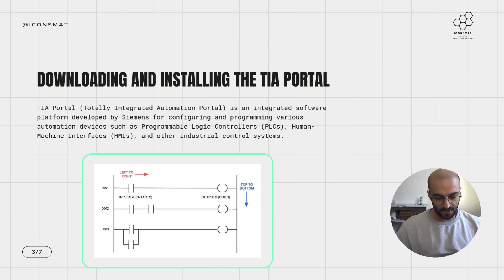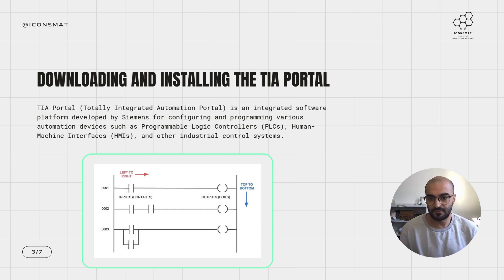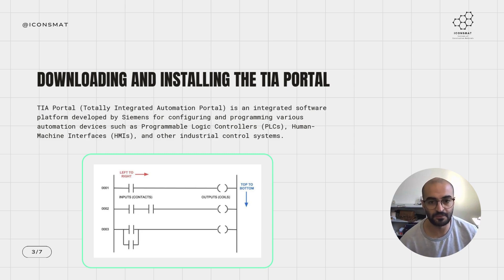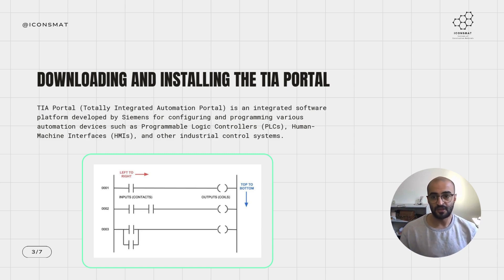TIA Portal stands for Totally Integrated Automation Portal. It is an integrated software platform developed by Siemens for configuring and programming various automated devices such as PLCs, human machine interfaces or HMIs, and other industrial control systems.